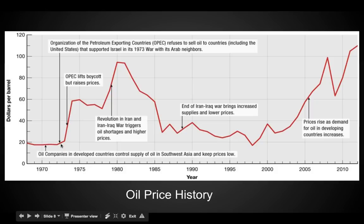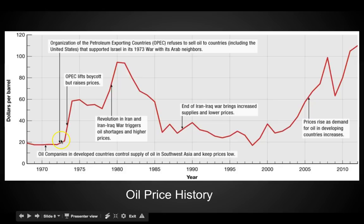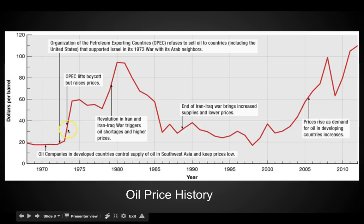Then in about 1973, OPEC countries refused to sell oil to countries including the United States because of the war with Israel. OPEC countries were against Israel — if you've got Muslim countries, they're against Israel because Israel tends to be Jewish and Christian backed by the United States and United Kingdom. So these OPEC countries, mostly Muslim, made the price of gas go way, way up in 1973 — just think about the 1973 war with Israel.